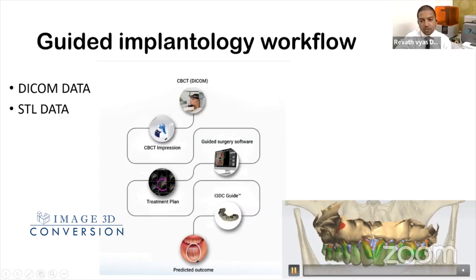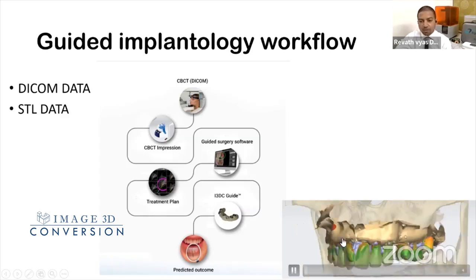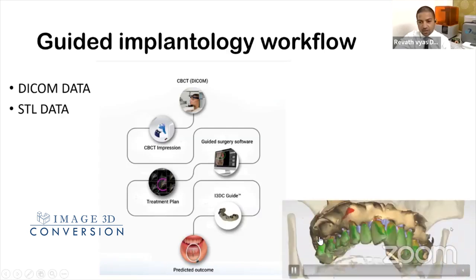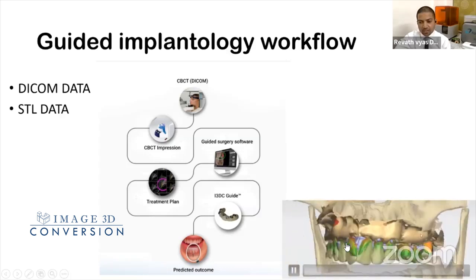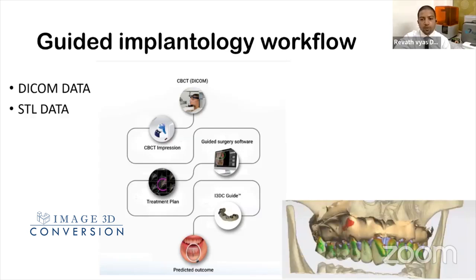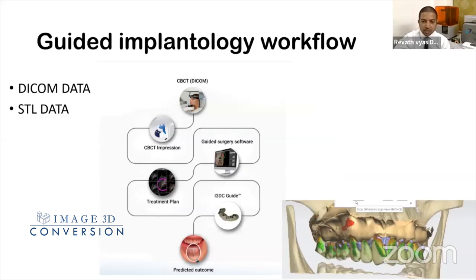This is how you merge the STL data and DICOM data. The model data is merged with the DICOM data of the patient. Anything in green color suggests the overlap is more or less perfect. Once such overlap is done, a guide is fabricated on this model, so drilling through the guide results in implant placement exactly where planned in the bone.